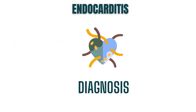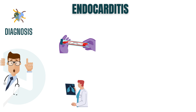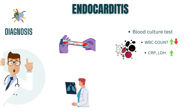When endocarditis is suspected, a comprehensive diagnostic journey begins. It involves a collaboration between healthcare professionals, advanced imaging techniques, and laboratory tests. Blood tests, including blood cultures, play a crucial role in diagnosing endocarditis. They help identify the specific microorganism causing the infection and guide the selection of appropriate antibiotics. They can also reveal important markers of infection, such as an elevated white blood cell count, increased inflammatory markers, and the presence of specific antibodies or antigens.